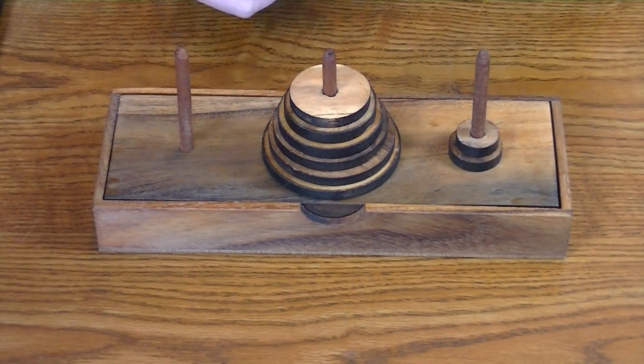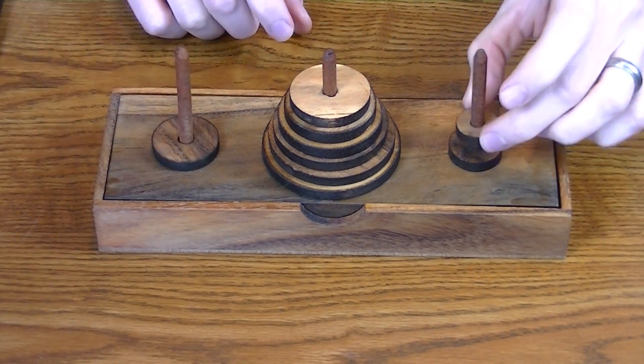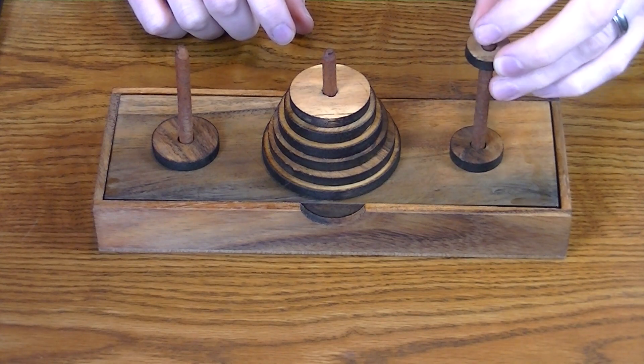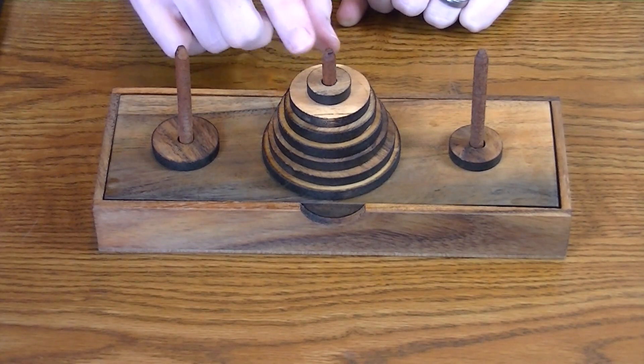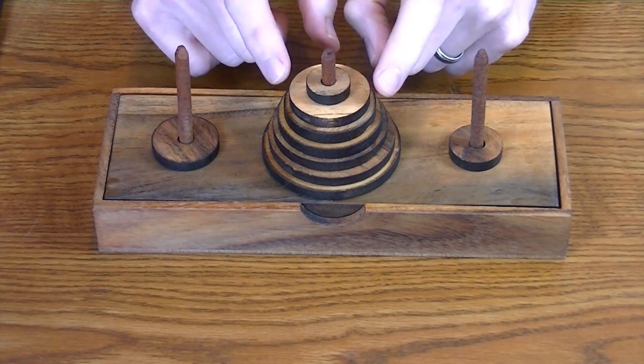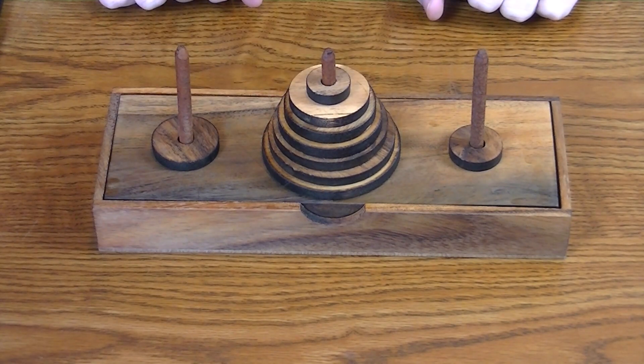Now you don't always have to have the pieces in order. For example, I have this small piece here, and I can put that on top of this one. That's fine. As long as it's a smaller piece on top of a larger piece, you're good to go.